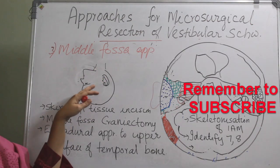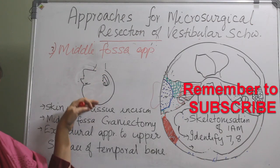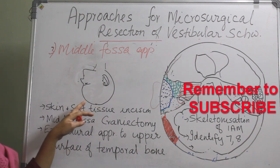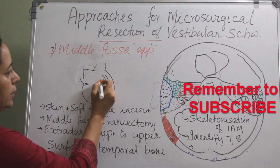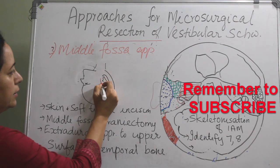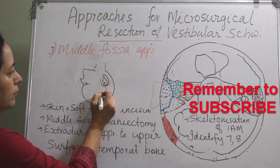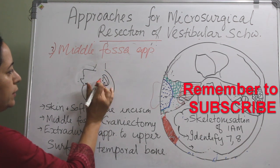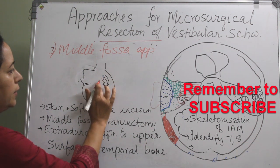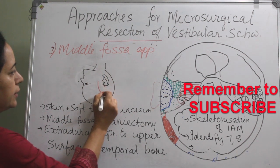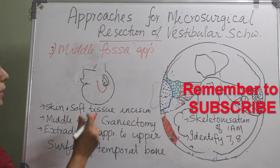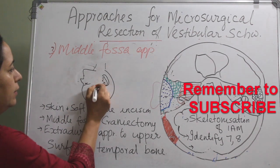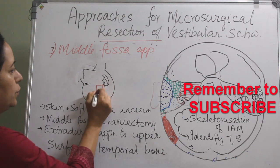The position is supine with the surgeon sitting at the head end of the patient. The incision is anterior — either a straight incision or an inverted U incision. In either case, after placing the skin and soft tissue incision, a middle fossa craniotomy is done, which is around 5 by 5 centimeters.